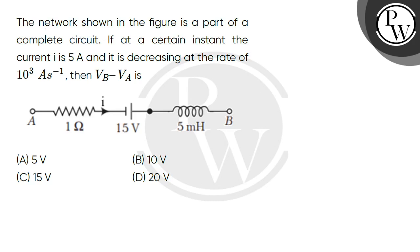Let's read the question. The network shown in the figure is a part of a complete circuit. If at a certain instant the current i is 5A and it is decreasing at the rate of 10³ per second, then Vb minus Va is...